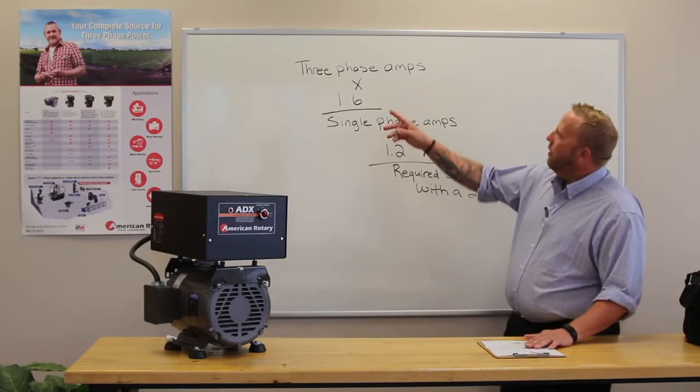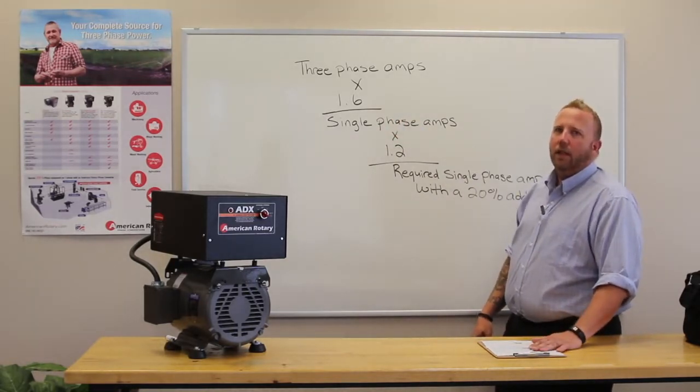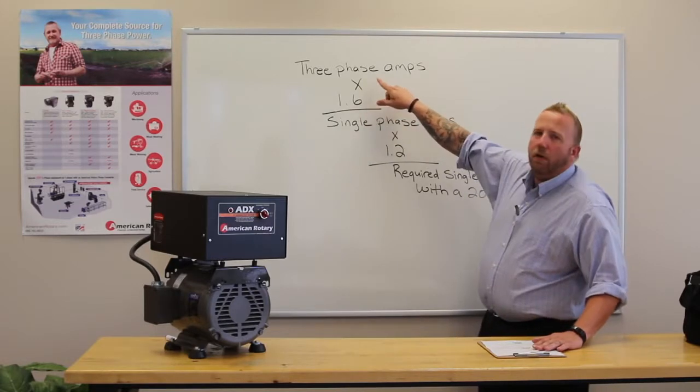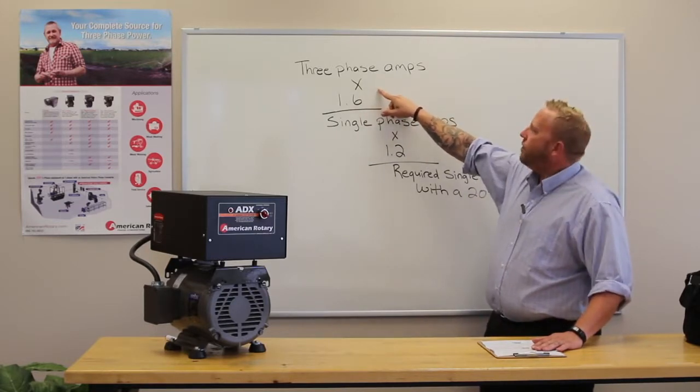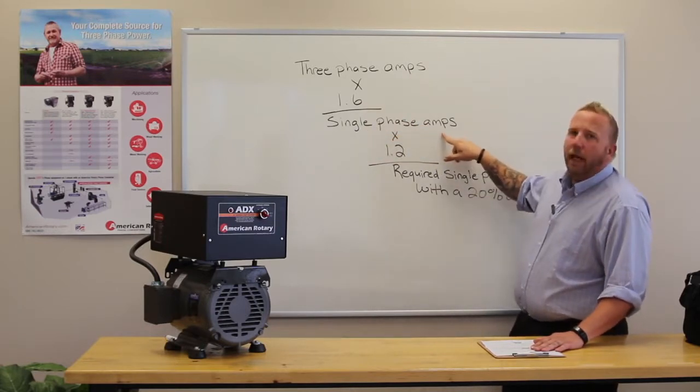So we have a formula here that tells you how to calculate what you're going to need on single phase. If you take your three phase amps of your load, multiply that by 1.6, you're going to get your single phase amps.